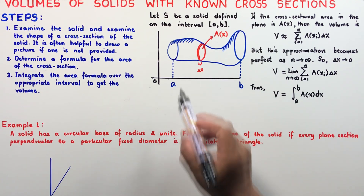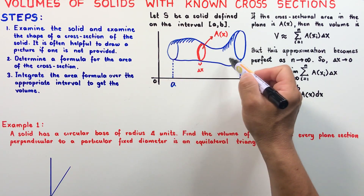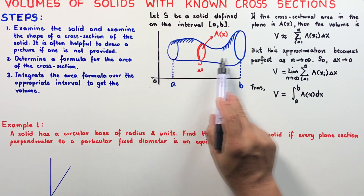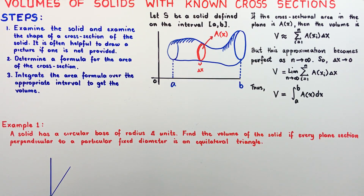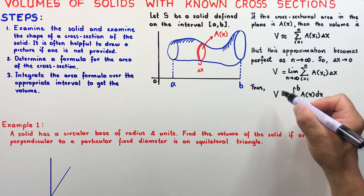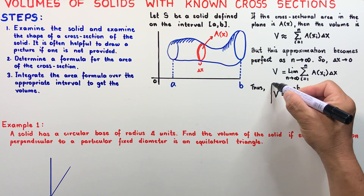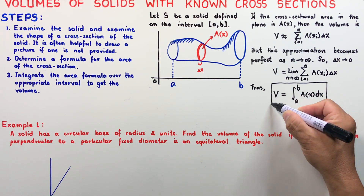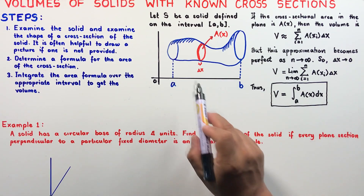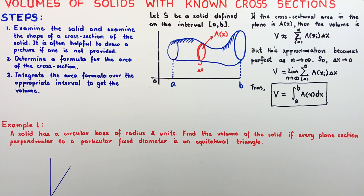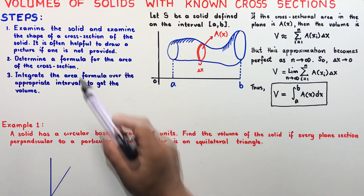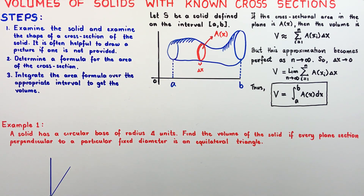We recognize that this is a limit of a Riemann sum, and therefore the volume is the integral of A of x dx from a to b, because we are slicing from a to b. Integrating — adding all the slices — comprises the whole volume of the solid. Hence, this is our formula for the volume of a solid not generated by revolution, provided the solid has a cross-section whose area is known.